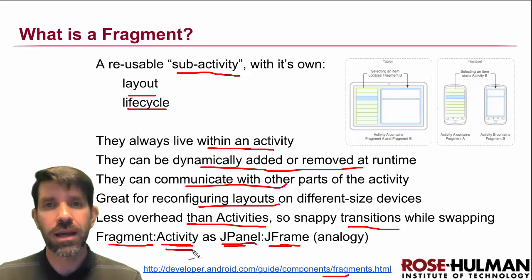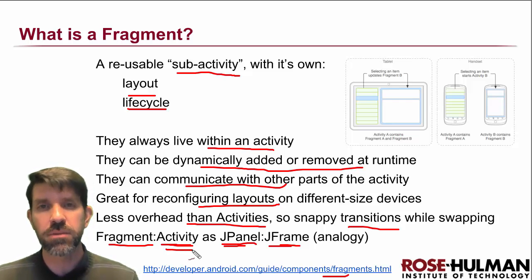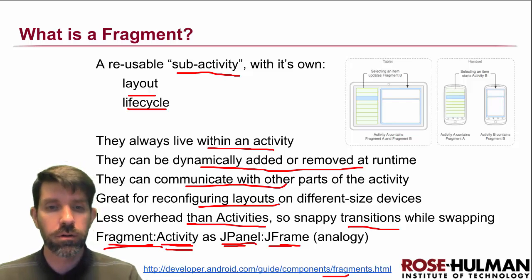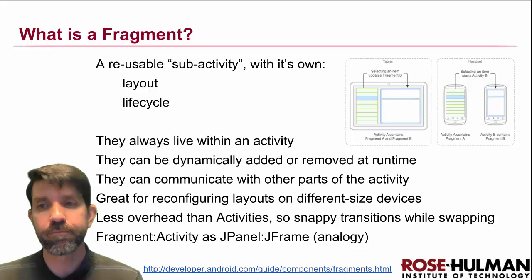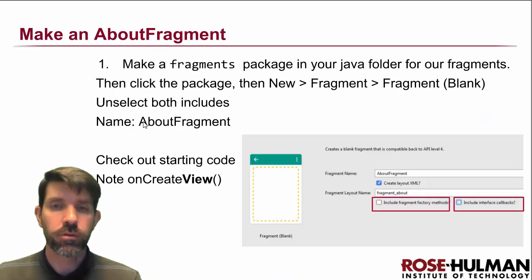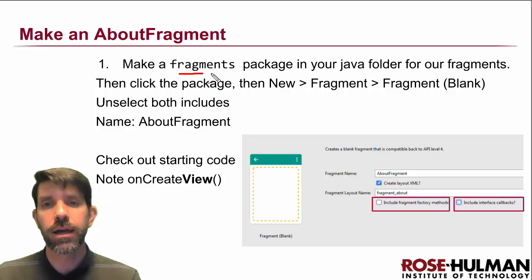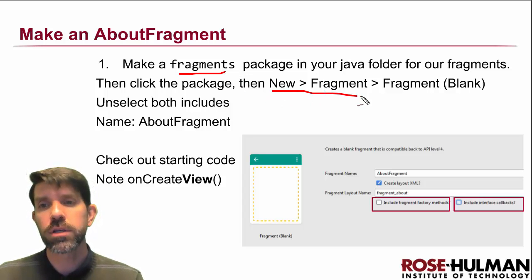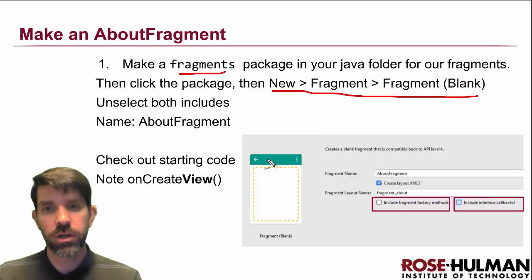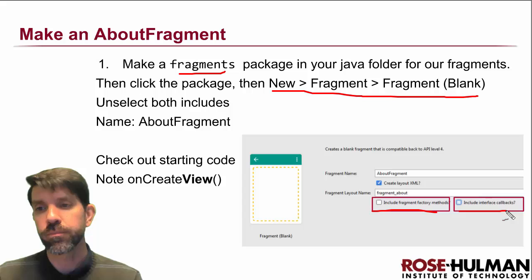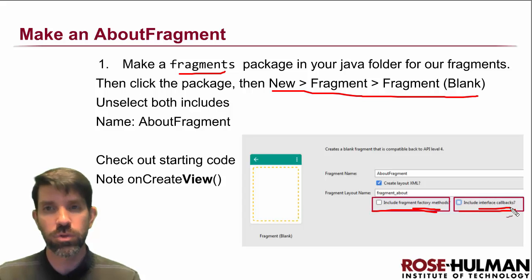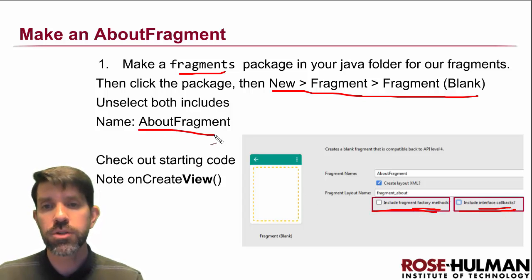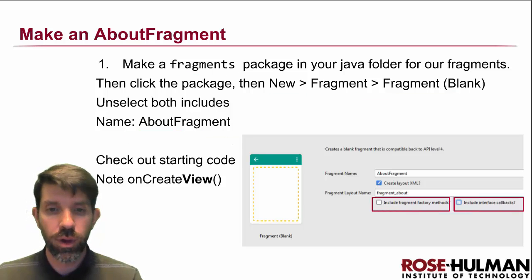Making activities in the big scheme of things is kind of a big deal, whereas fragments are less overhead — they're lighter weight. So let's do it. What I want us to do is make an About Fragment. Since we're going to have three different fragments in this app, I'll make a little fragments package to organize them. We'll create a new blank fragment, and for this first About one, no factory methods, no callbacks. I'll just call it AboutFragment.